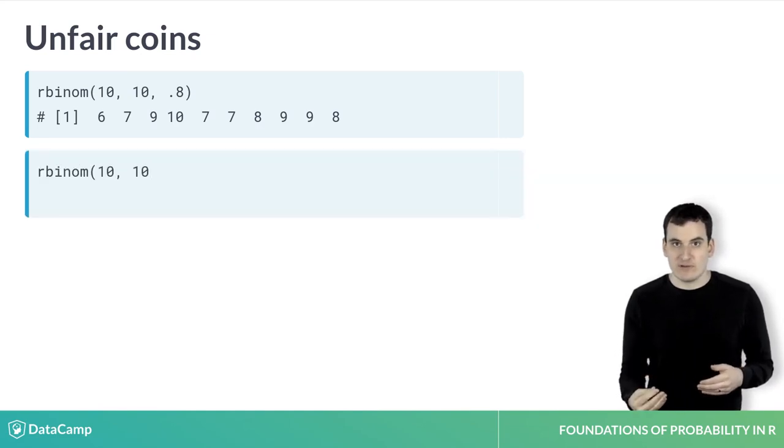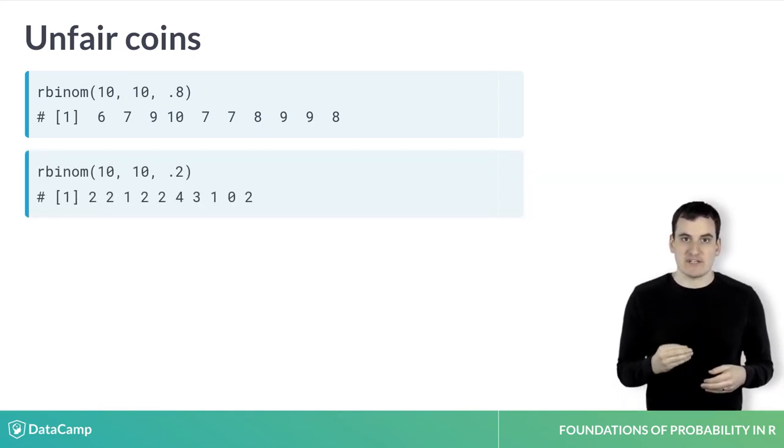When the third parameter is 0.2, each flip has only a 20% chance of being heads, and out of 10 flips, each of our draws has around 1 to 3 heads.